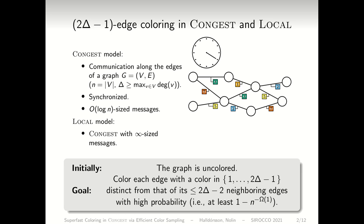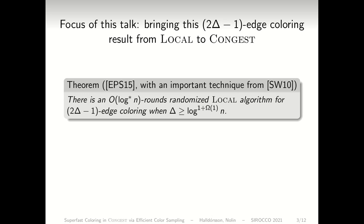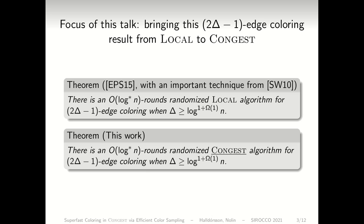In this model, I'm going to mostly talk about the 2Δ-1 edge colouring. A few years ago, Elkin, Petty, and Su showed that you can do randomised colouring of the edges of a graph with 2Δ-1 colours in only log* n rounds, granted that the maximum degree delta is more than log n — slightly more than log n. Log* n is very fast; it's an iterated log, the number of times you need to apply log to n to get to a constant. So it's extremely fast, and what I want to show you is how to get this result into CONGEST.